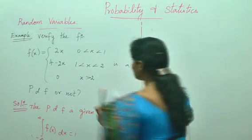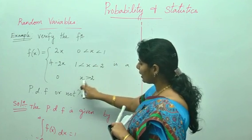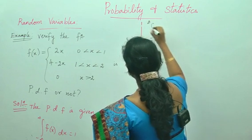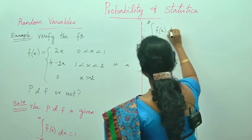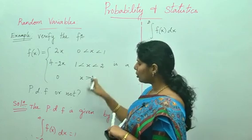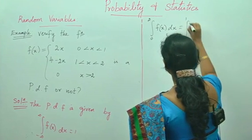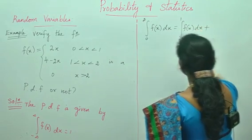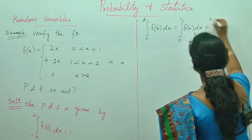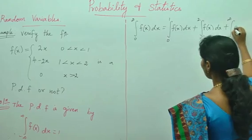Now, the limits given are 0 < x < 1, 1 < x < 2, and x > 2. In that case you write it as the integral from 0 to infinity of f(x) dx, which splits into: integral from 0 to 1 of f(x) dx, plus integral from 1 to 2 of f(x) dx, plus integral from 2 to infinity of f(x) dx.